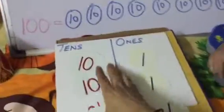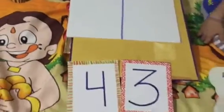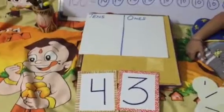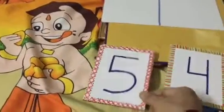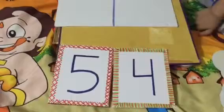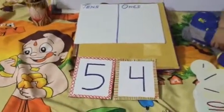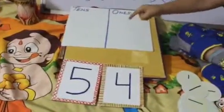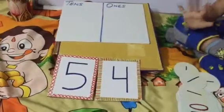Now you will do fifty. What is this number? Fifty-four. How many tens and how many ones? Ten only five. And one only four.